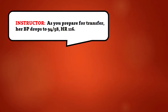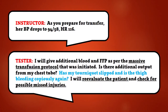As you prepare for transfer, her blood pressure drops to 94 over 58, heart rate 116. I will give additional blood and FFP as per the massive transfusion protocol that was initiated. Is there additional output from my chest tube? Has my tourniquet slipped and is the right thigh bleeding copiously again? I will reevaluate the patient and check for possible missed injuries.